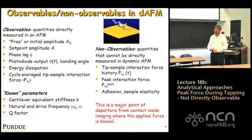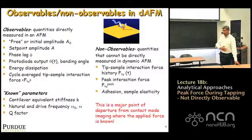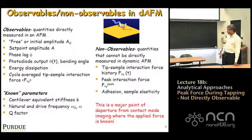Everything on the left — either you know or you observe in an experiment. Everything on the right you do not observe. The big challenge in AFM for a very long time was: how do you take everything you can observe on the left and predict what is on the right? If you can do this, you are able to map in tapping mode and get quantitative numbers for adhesion or elastic modulus when you are tapping, which is an extremely difficult thing to do.